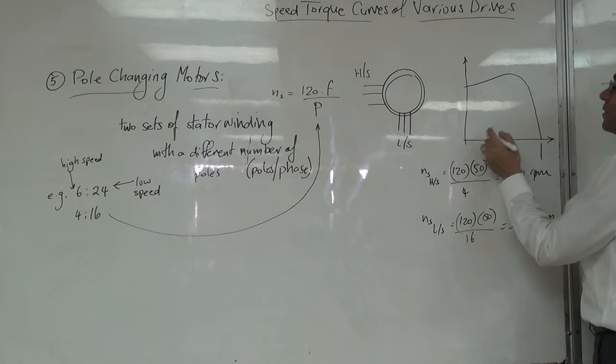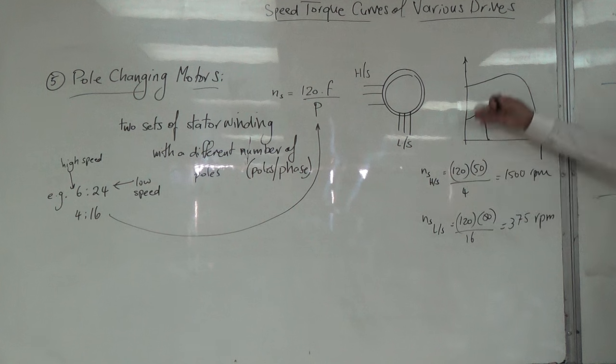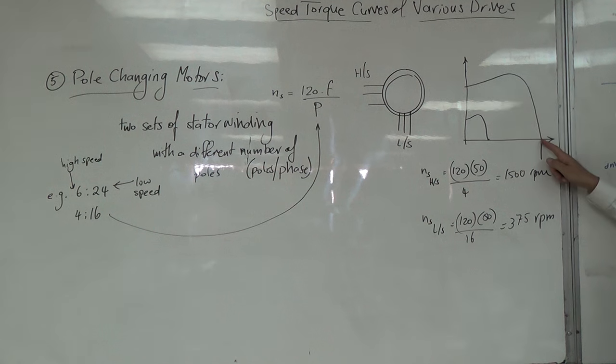هلأ الانخفاض في هذا سببه مش عدد الـ poles، السببه إنه الـ winding مختلفة، ما عم تعطيني نفس الكمية. هذا الاختلاف والنزول سببه مش الـ poles.